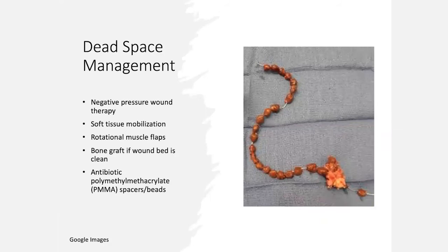In terms of dead space management, I highly advise negative pressure wound therapy. If you have wall suction capability, you can use ABD pads from the OR with a chest tube connected to wall suction using Ioban, and this is very helpful to reduce wound size as you stage your management. You will need to consider soft tissue mobilization to cover defects, including rotational flaps such as soleus and gastroc flaps. When removing a very large sequestrum with a large exposed medullary cavity, you can acutely bone graft; PMMA spacers and beads are very helpful, particularly when planning staged debridement and reconstruction.